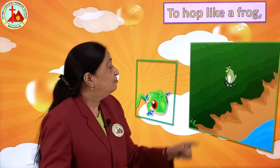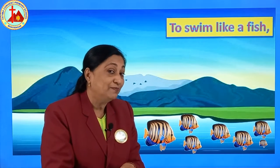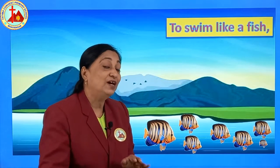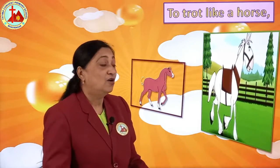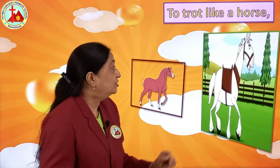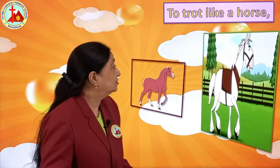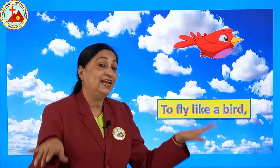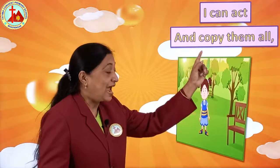To swim like a fish. Yes, it is fun to swim like a fish. To trot like a horse. Trot means — see this running — that is called trotting. To trot like a horse. To fly like a bird. I told you now at the beginning — to fly like a bird.